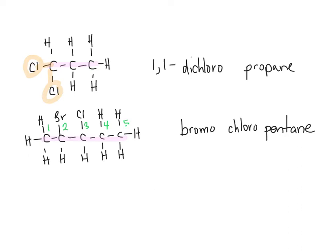Otherwise, we will end up with a 3-4 combination. If we started counting from the right, we would end up with a 3-4 combination. This way, we end up with a 2-3 combination. So the bromo is on the second carbon from the end, and the chloro, the chlorine, is on the third carbon from the end. So this is 2-bromo, 3-chloro, pentane.